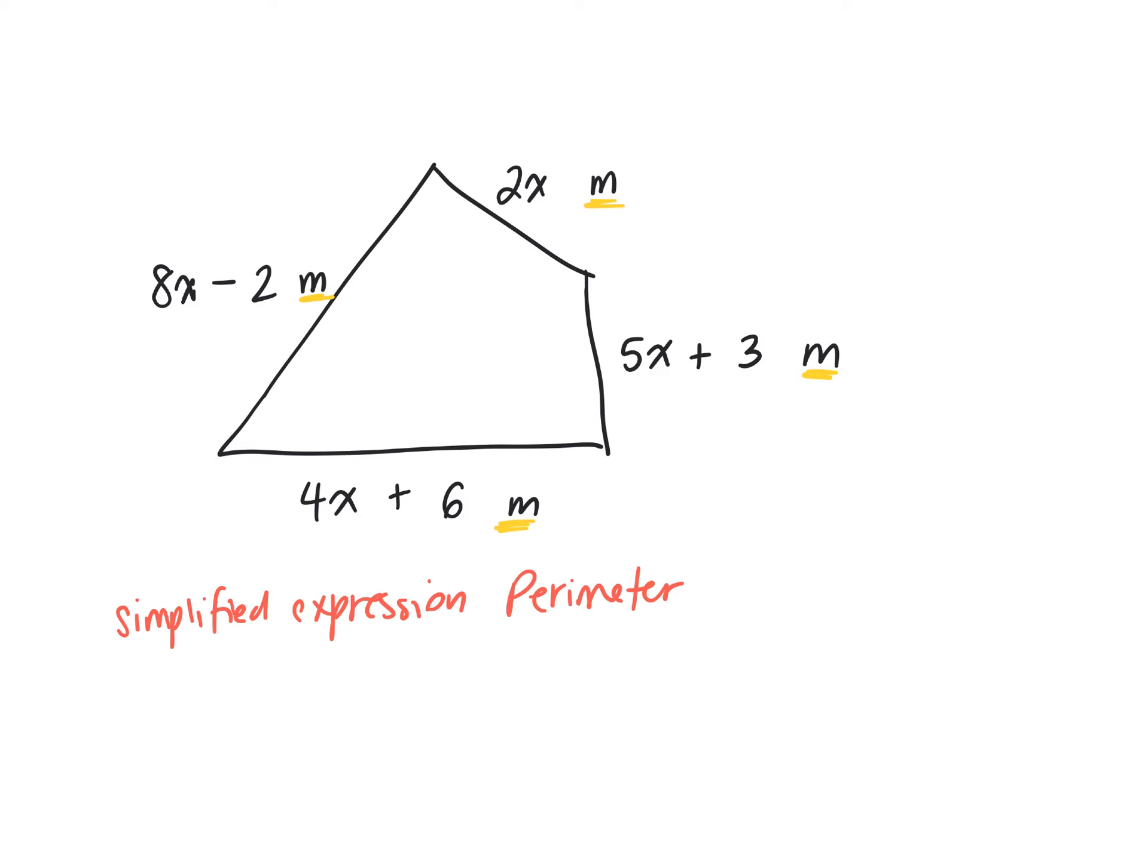So the length of this side is 2x, the length of this side is 5x plus 3, the length of this side is 4x plus 6, and the length of this side is 8x minus 2. That represents the length of each side.